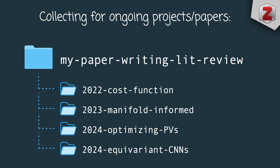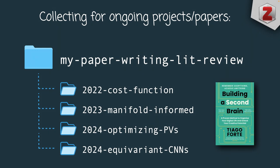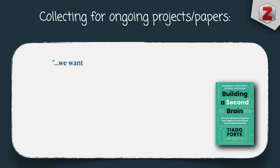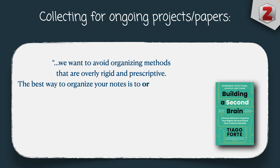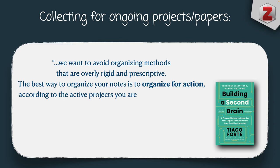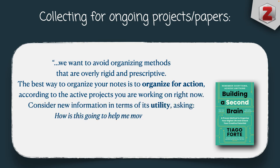This way of organizing literature comes from the book Building a Second Brain by Tiago Forte, who recommends organizing directly for a specific project because it saves time retrieving information and creates a handy bubble of all the necessary literature to push your work forward. He says: we want to avoid organizing methods that are overly rigid and prescriptive. The best way is to organize for action, according to the active projects you are working on right now, considering new information in terms of its utility.